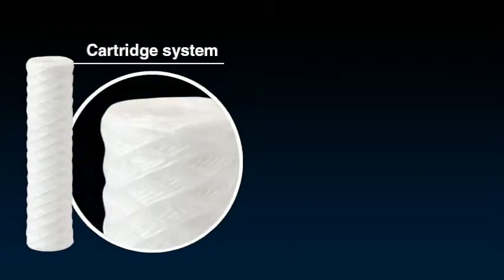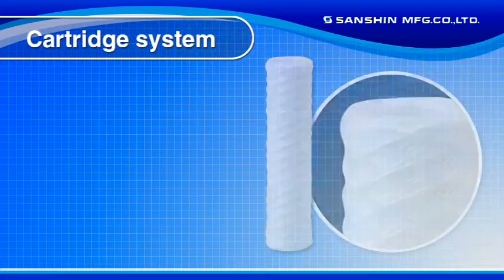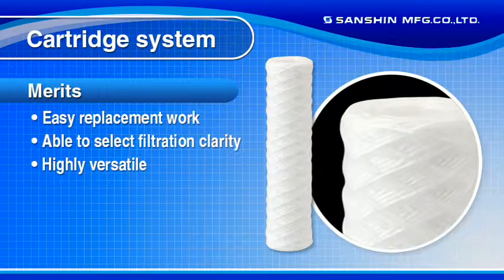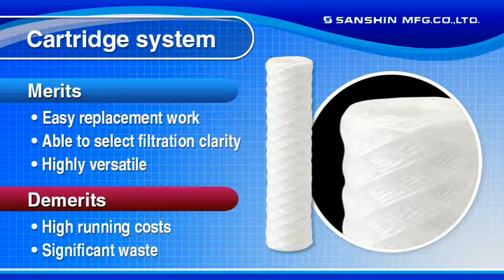Filter performance and features differ depending on the respective filter media used. Typical examples are the cartridge system with spool and the filter cloth pre-coated system using filter aid. With the cartridge system, filter media can be replaced easily and the wide range of available cartridge filter media allows the appropriate filtration clarity to be selected to suit the application, making this a highly versatile system. On the other hand, cartridge filter media are disposable, so running costs are high and waste tends to be significant.